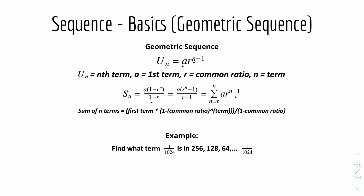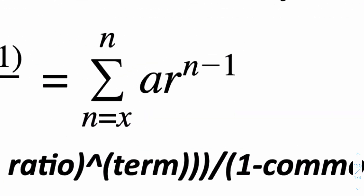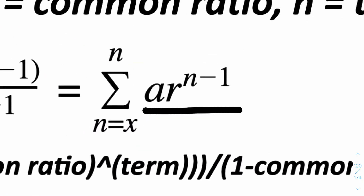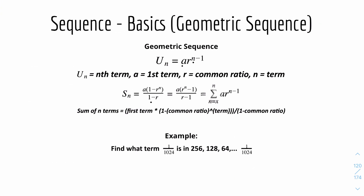The last notation shown is sigma notation, used typically for sum to infinity, which we'll look at later. Here the sigma represents the sum of the geometric series expression, with n equals something as the starting term, continuing upward. This sigma notation is equivalent to the previous two sum formulas, so just keep that in mind.